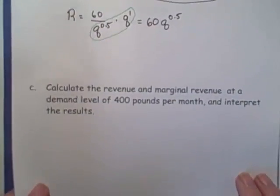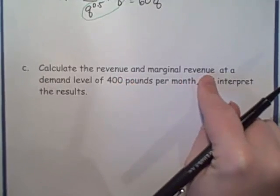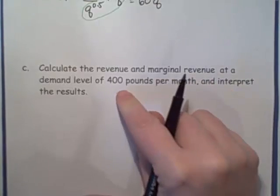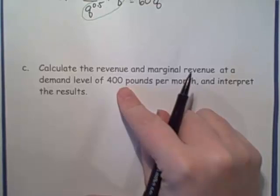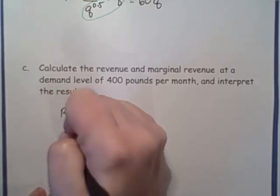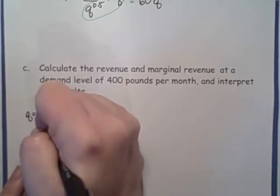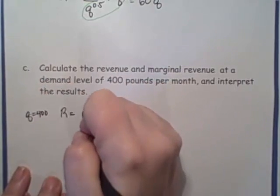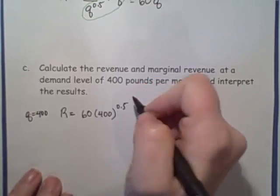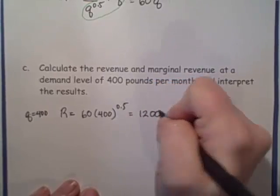Let's move on to part C. It says calculate the revenue and marginal revenue at a demand level of 400 pounds per month. Now remember, marginal revenue is just the derivative of the revenue function. Okay, so first let's do our revenue. If Q is 400, then our revenue is going to be 60 times 400 to the 0.5. So that's going to be 1,200.